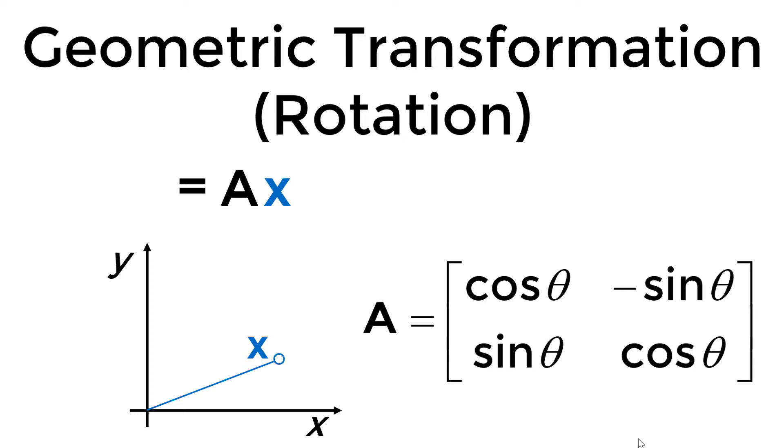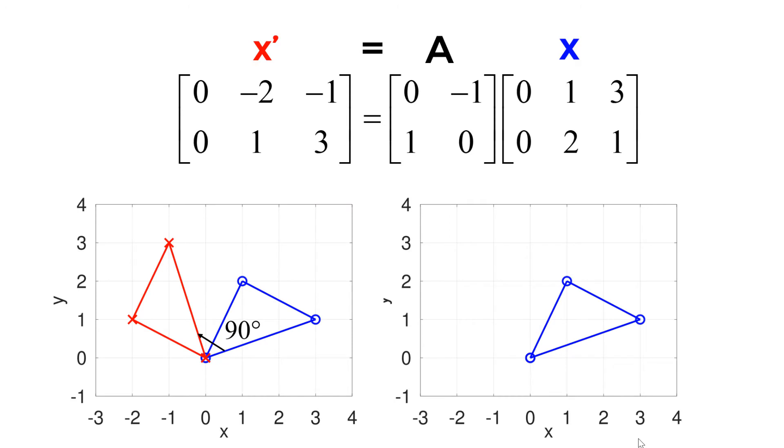Once you multiply A by x, you can predict the new position for the counter-clockwise rotated coordinate x prime. Let's say we have a simple triangle geometry in y versus x plane as blue points and lines.